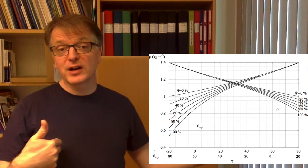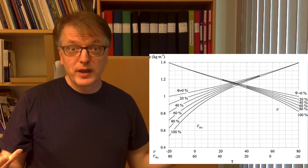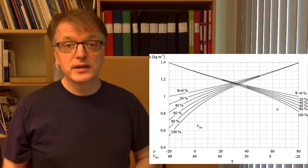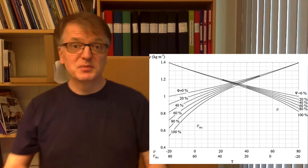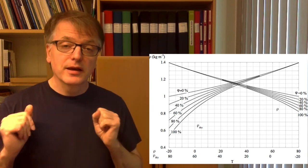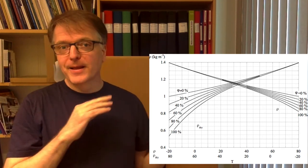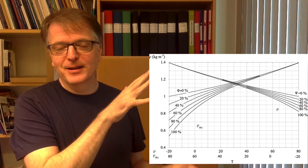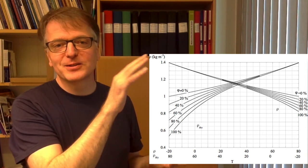The zero relative humidity lines for the two are just mirror images of each other, because if you don't have any water at all in the air, the dry density must be the same as the wet density, right? This might be a nice graph to use.